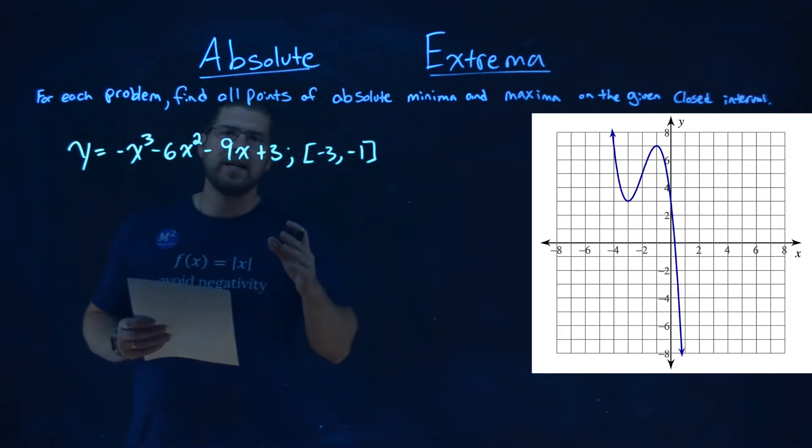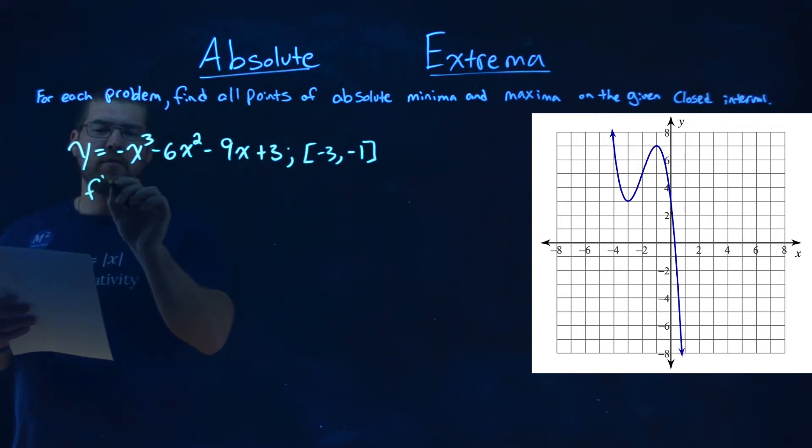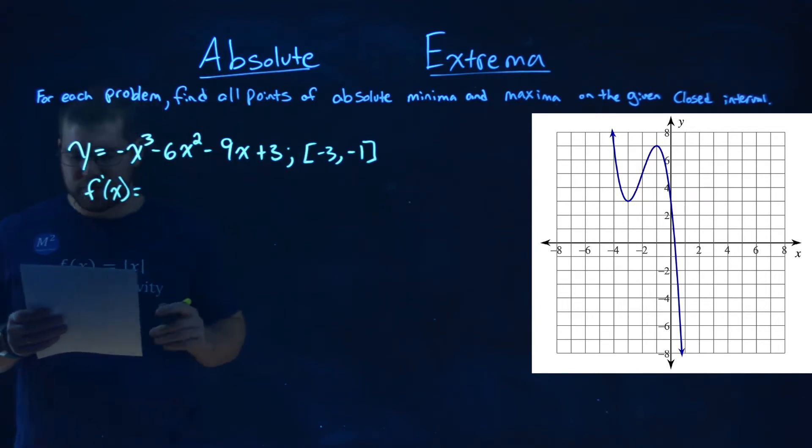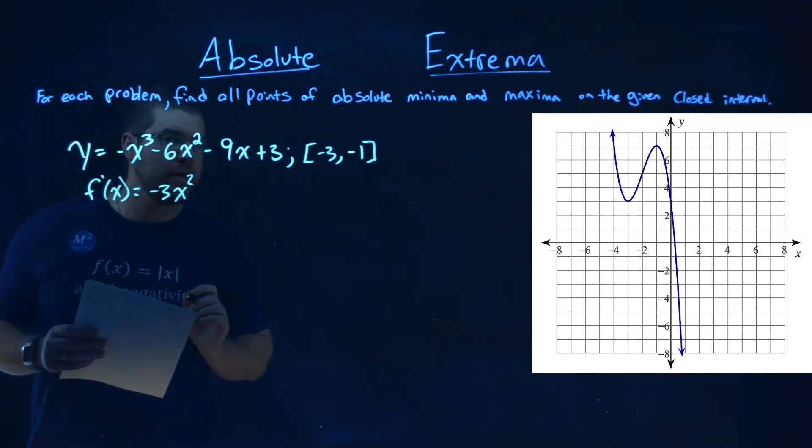The first thing I need to do here is find the derivative. I'm going to find my derivative, call it f prime of x, and we're using our power rule. 3 comes down, negative 3x squared, subtract the exponent by 1 here,